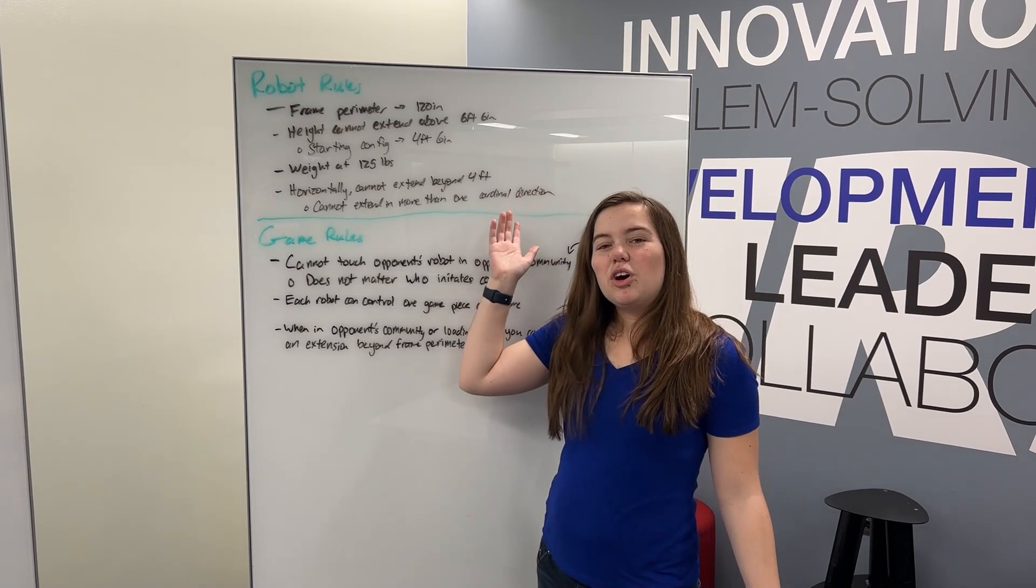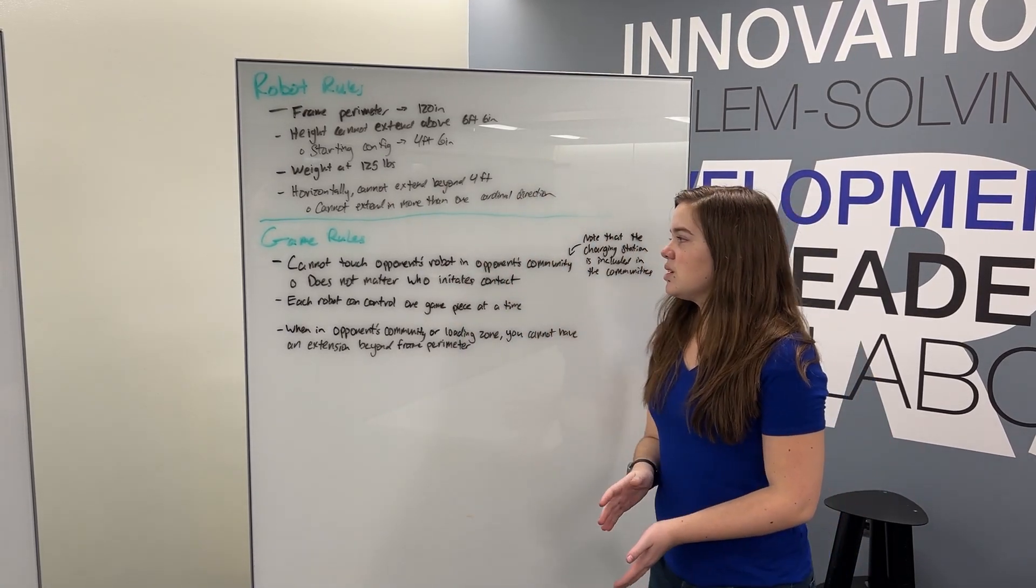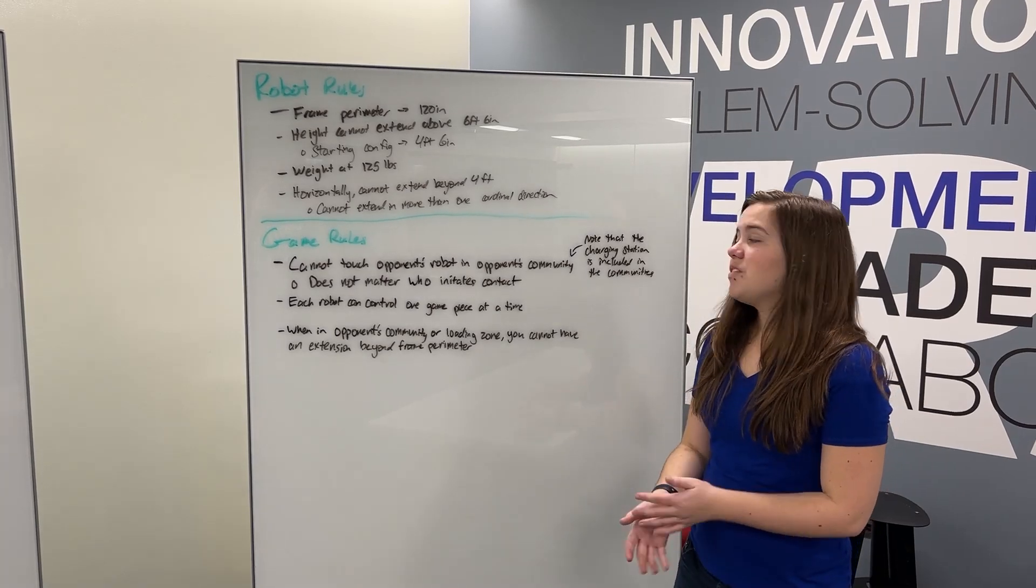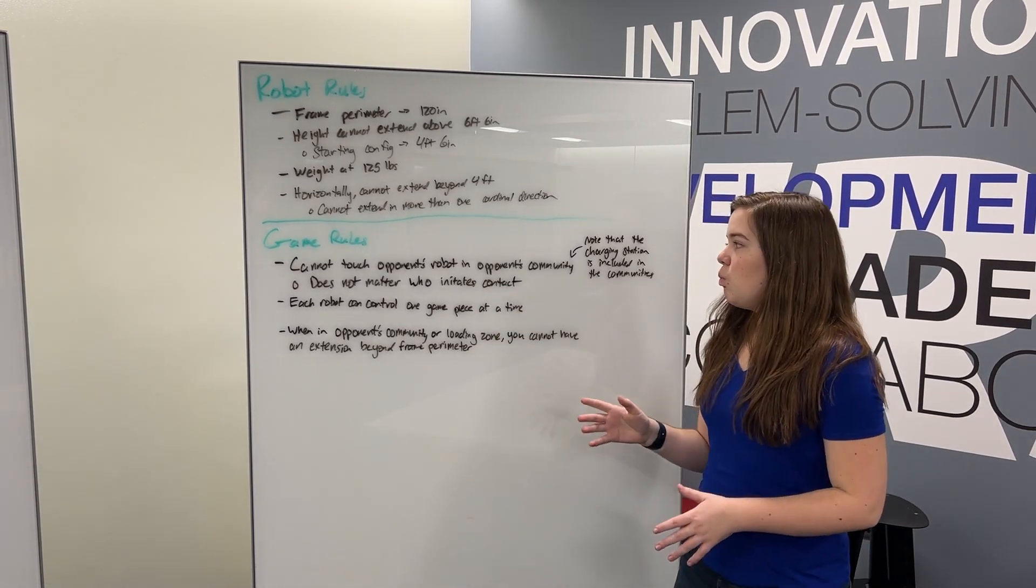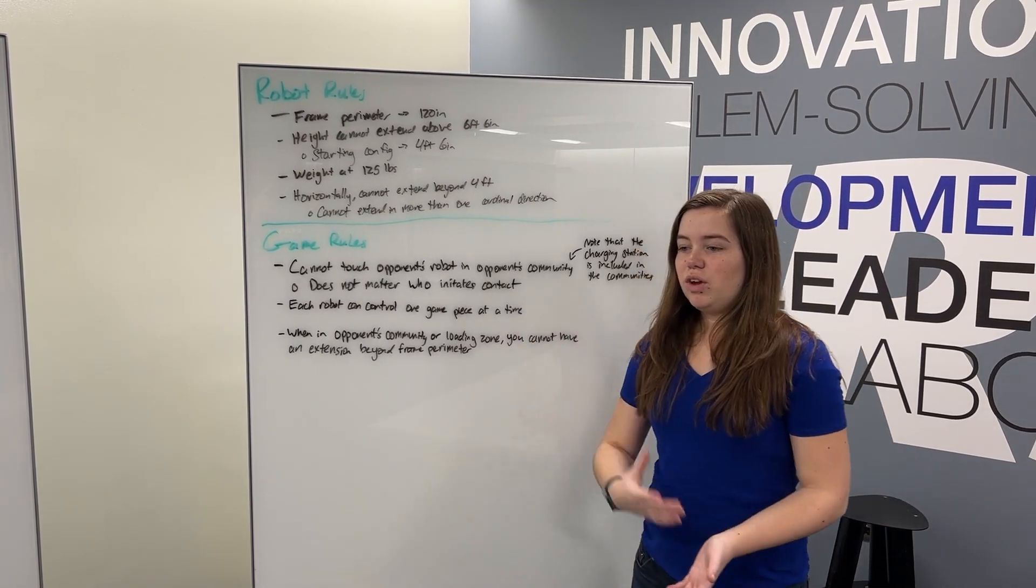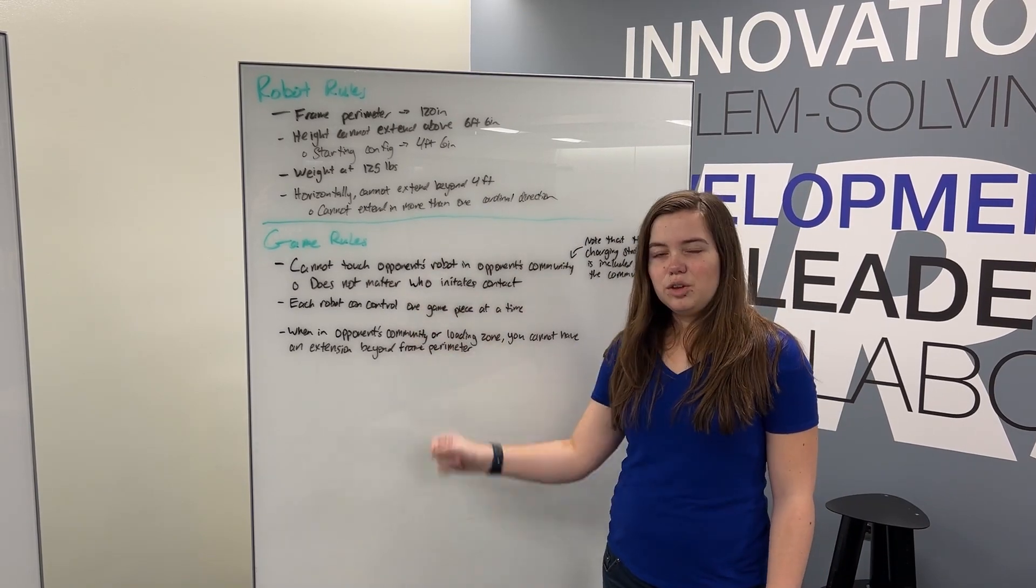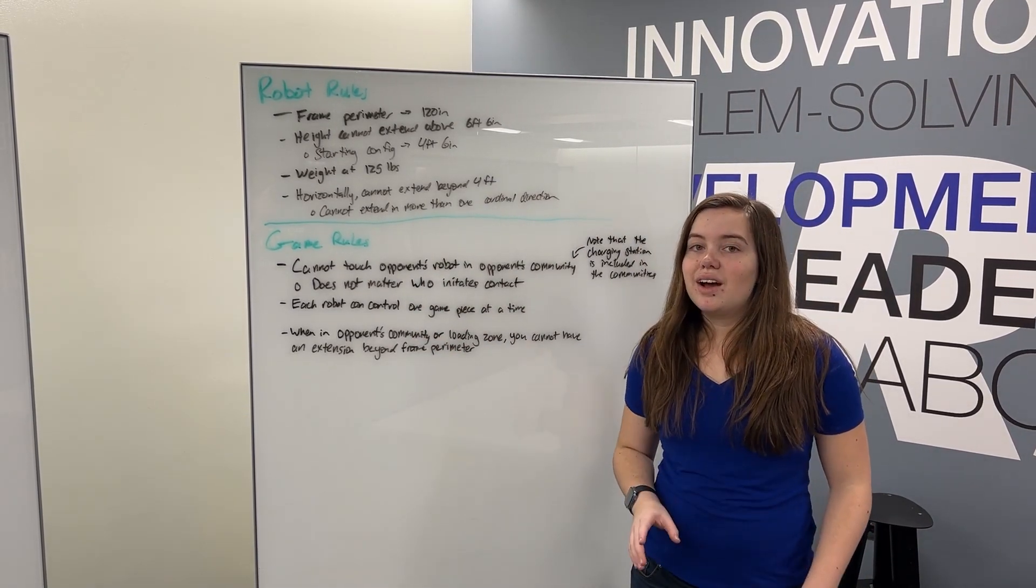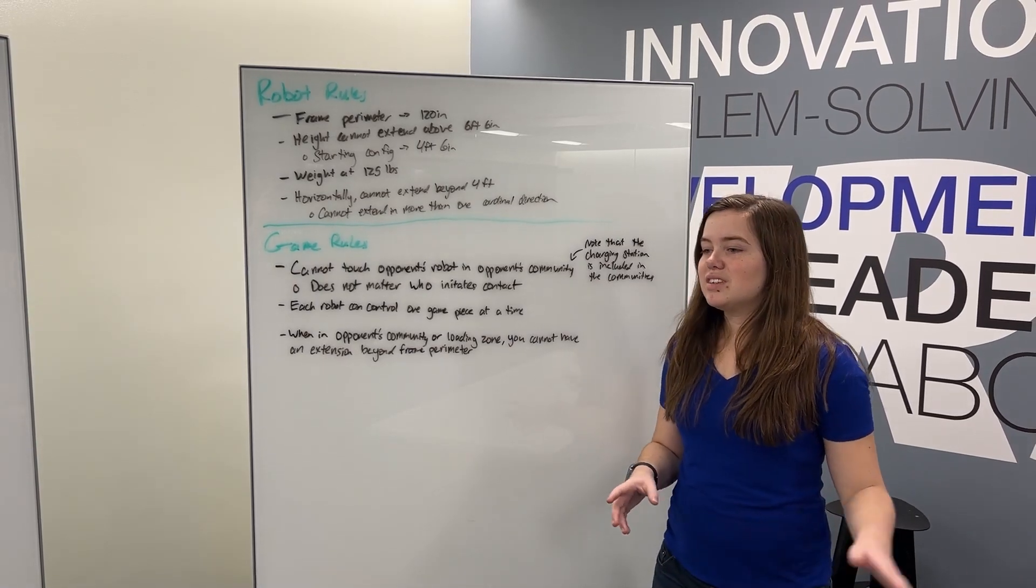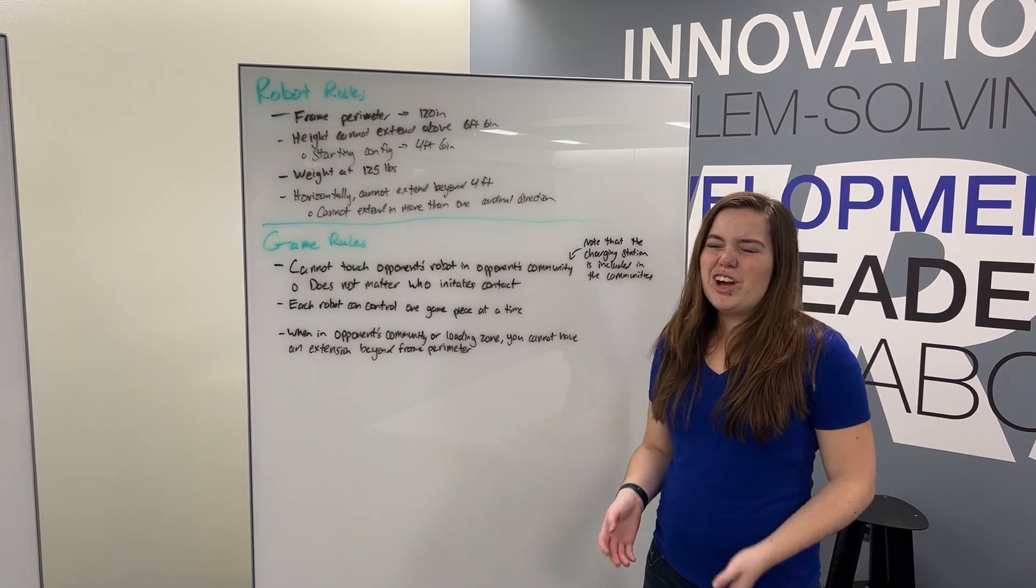And that's pretty much all the significant changes for the robot rules. So moving on to game rules, there are some pretty significant ones. First off, you cannot touch your opponent's robot while they are in their own community. So if you're on the Red Alliance, you cannot touch a Blue Alliance robot when it is in the Blue Alliance community area. It does not matter who initiates the contact, so please be careful. Because if you're in there and the other robot rams you, well then you're out of luck.